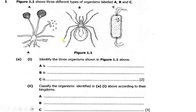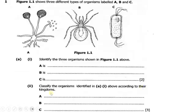Let's read through the questions then we'll start answering afterwards. Question one reads: Figure 1.1 shows three different types of organisms labeled A, B, and C. Roman numeral 1: identify the three organisms shown in figure 1.1. Roman numeral 2: classify the organisms identified in part A according to their kingdoms.